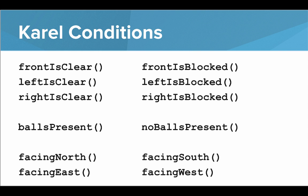The conditions are questions that we can ask about Carol's world. We can ask if the front is clear, if the left is clear, if the left is blocked, are there balls present, or is Carol facing north. A condition is like a question we can ask about the world, and it ends in open parentheses, close parentheses — like a method.